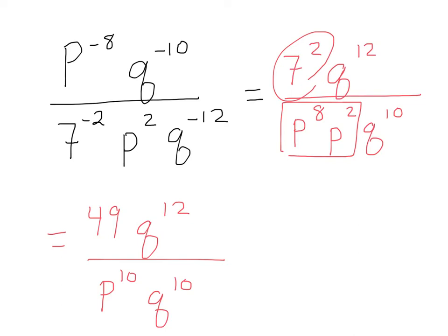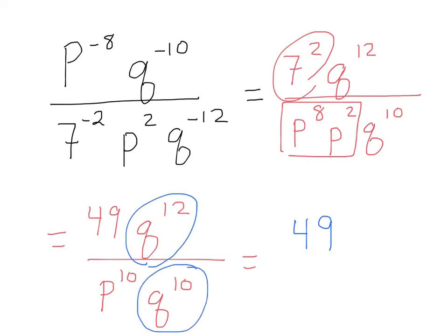Here's what you do: when you subtract, the question is, does your result go on top or on bottom? Well, here's how you know. Your exponent for q on top is 12, and your exponent for q on bottom is 10. Which is bigger, 12 or 10? Whichever one's bigger, that's where you put your result. Since the 12 is bigger and it's on top, your result goes on top. So I've got 49, and q to the 12th divided by q to the tenth is q to the second, and it'll go on top over p to the tenth. And there's your answer.